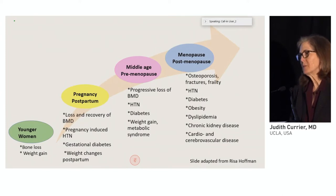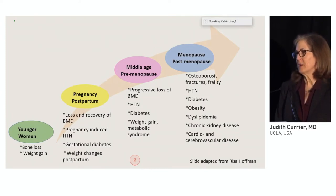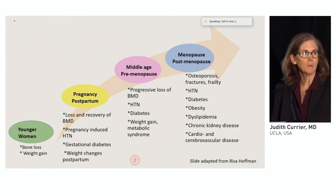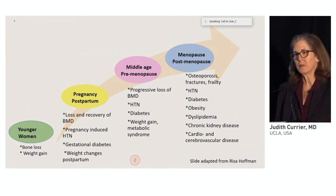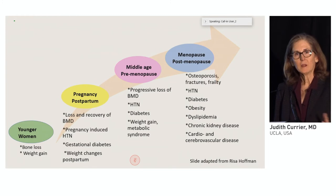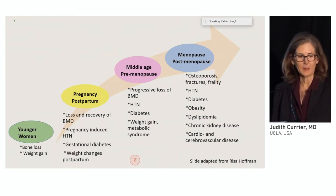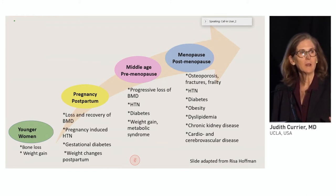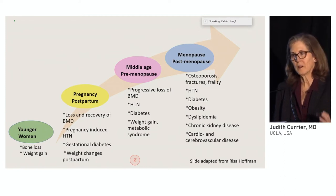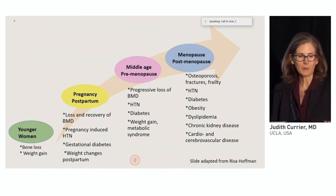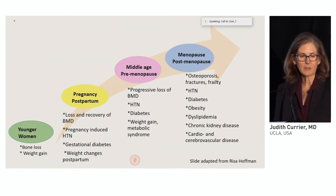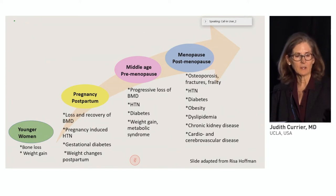As we think about complications, we need to think about how this changes over the life course. There may be unique contributions of specific issues at different stages during the lifespan, and there also may be consequences of things that happen early, like bone loss in pregnancy, that could set the stage for bone loss later in life. Risa Hoffman made a version of the slide that summarizes the differences in the types of complications that we might see.